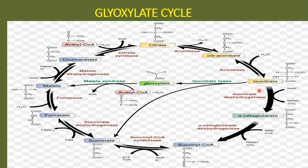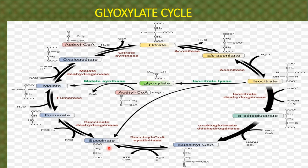Isocitrate is cleaved by the enzyme isocitrate lyase into two molecules: glyoxylate — the main compound after which this cycle is named — and succinate. This bypass of the TCA cycle was first described by Krebs and Kornberg, who studied microorganisms that grow on acetate as a sole carbon source, requiring two- or three-carbon compounds for energy.